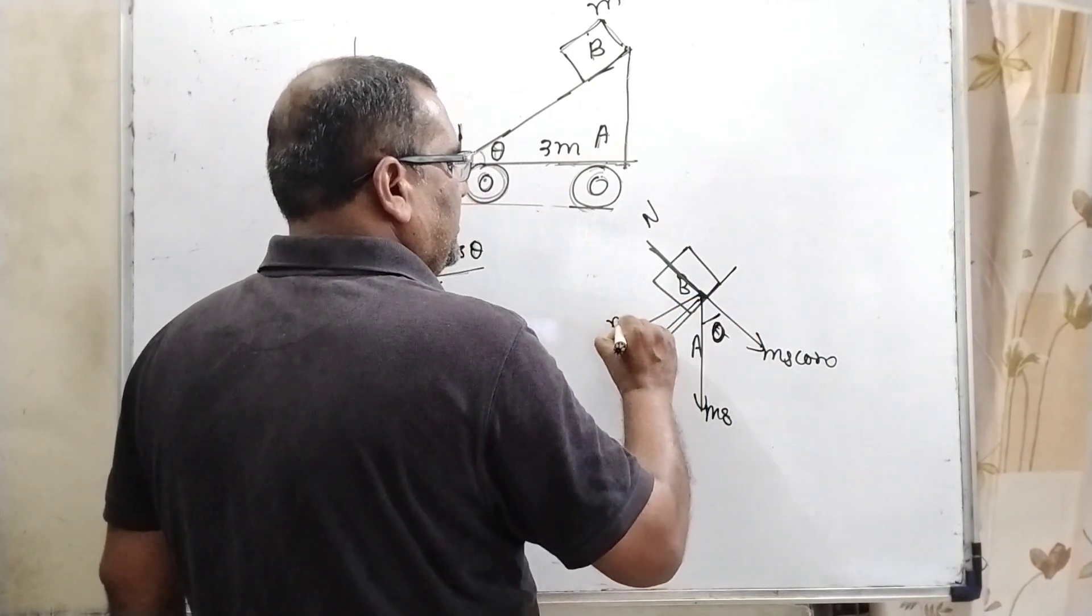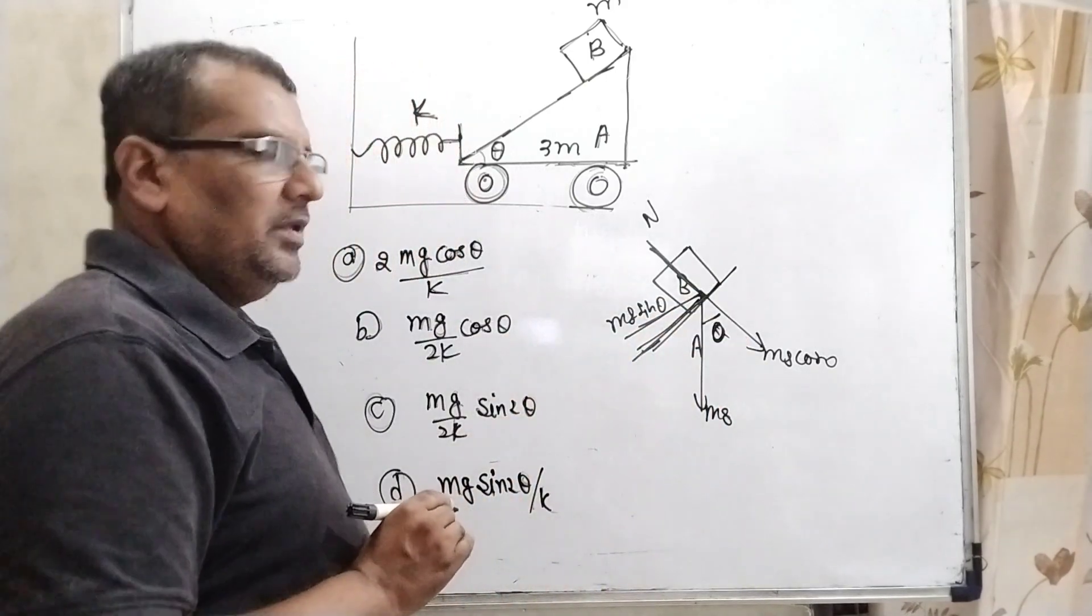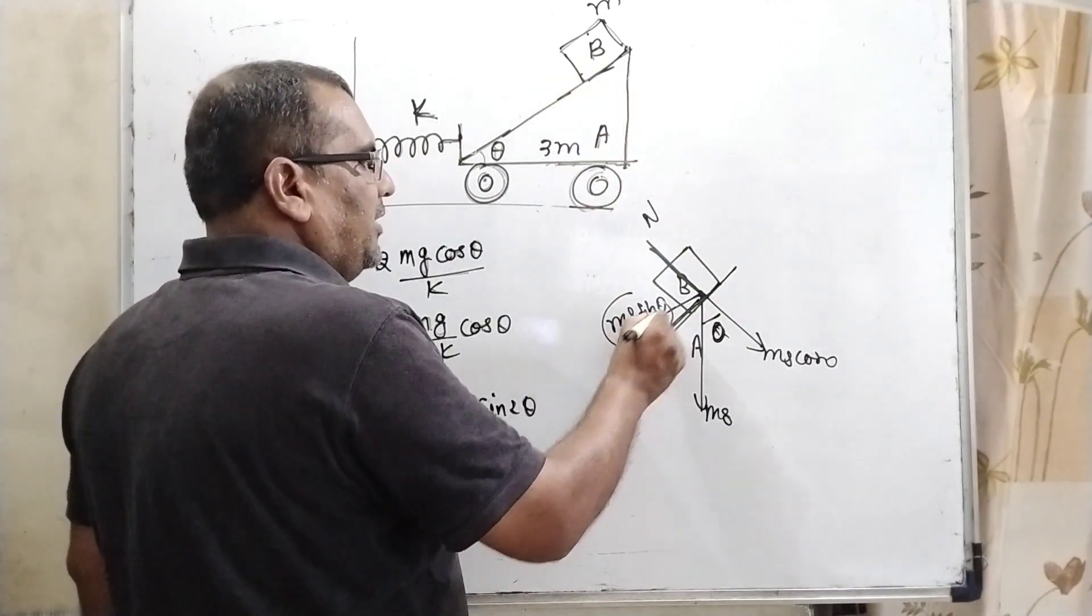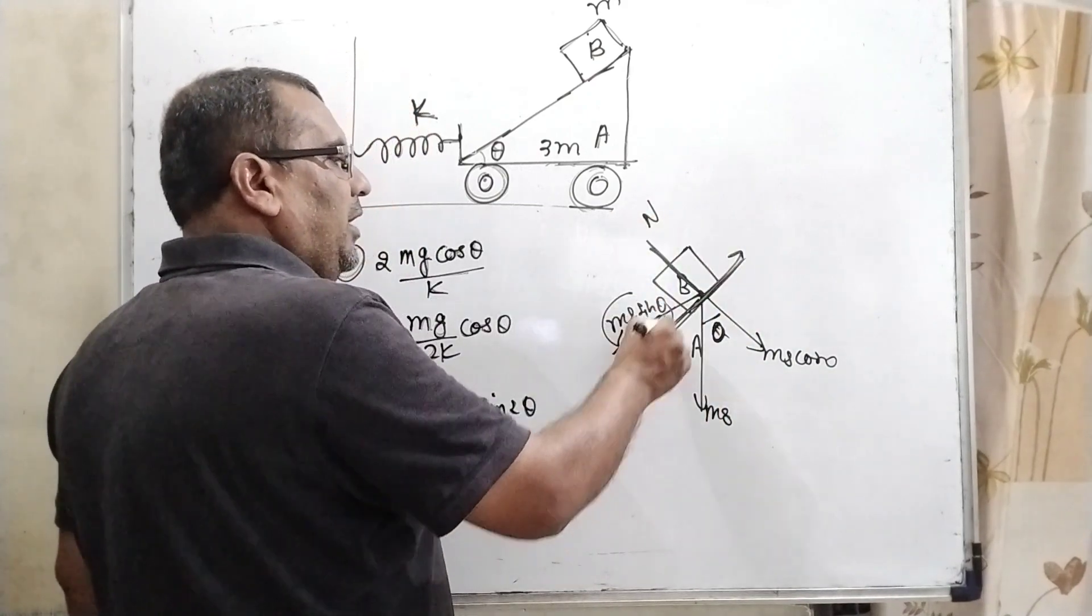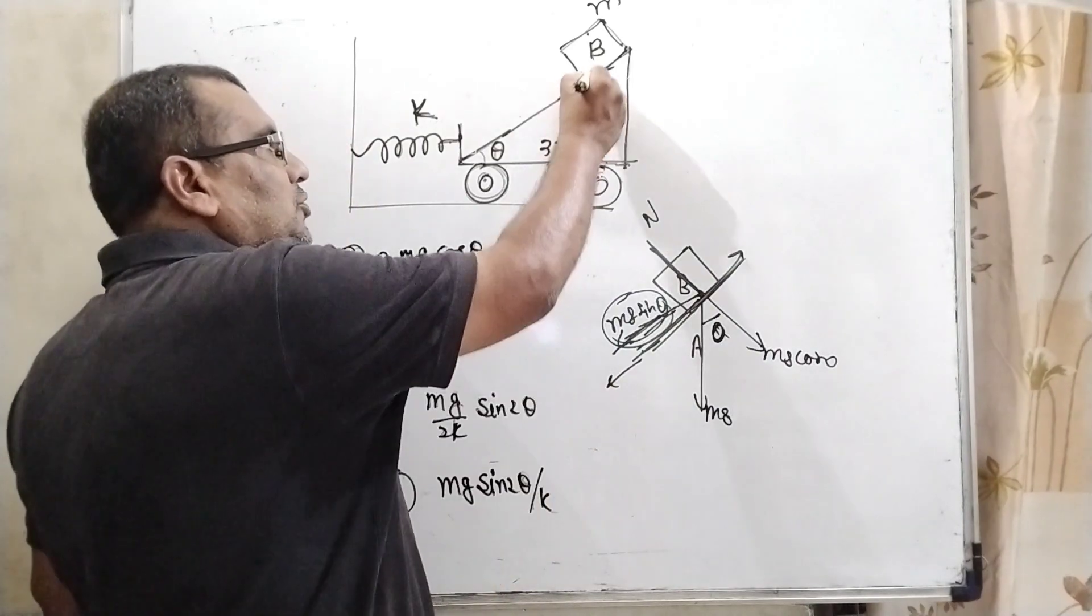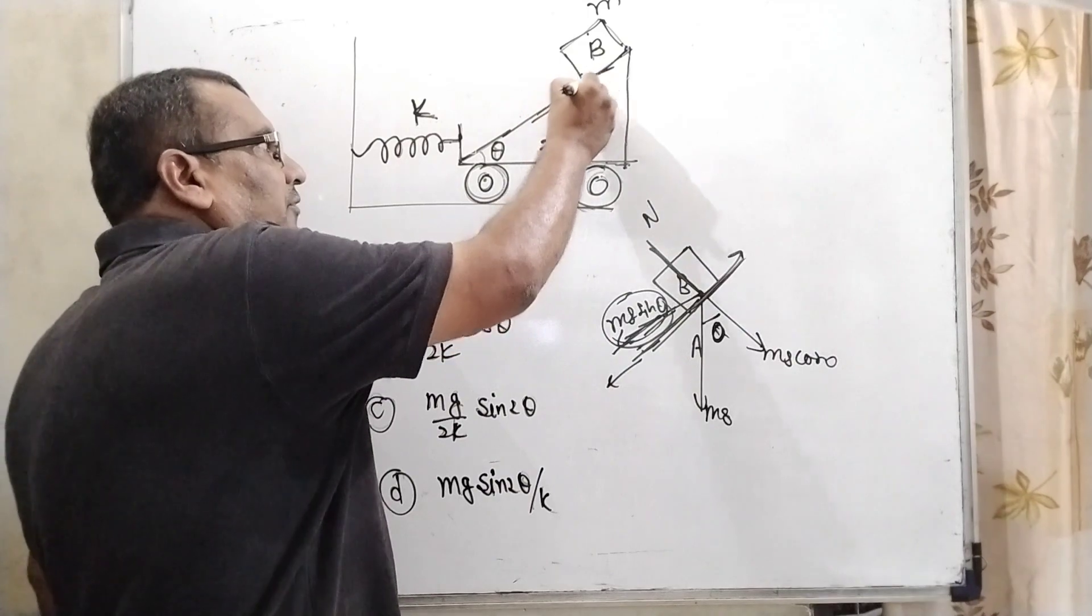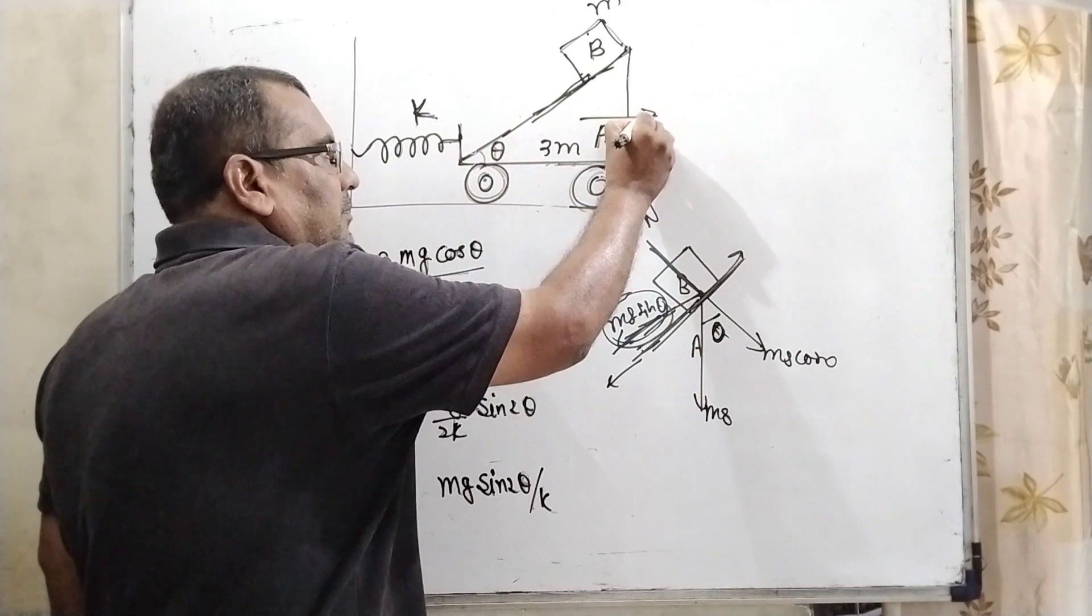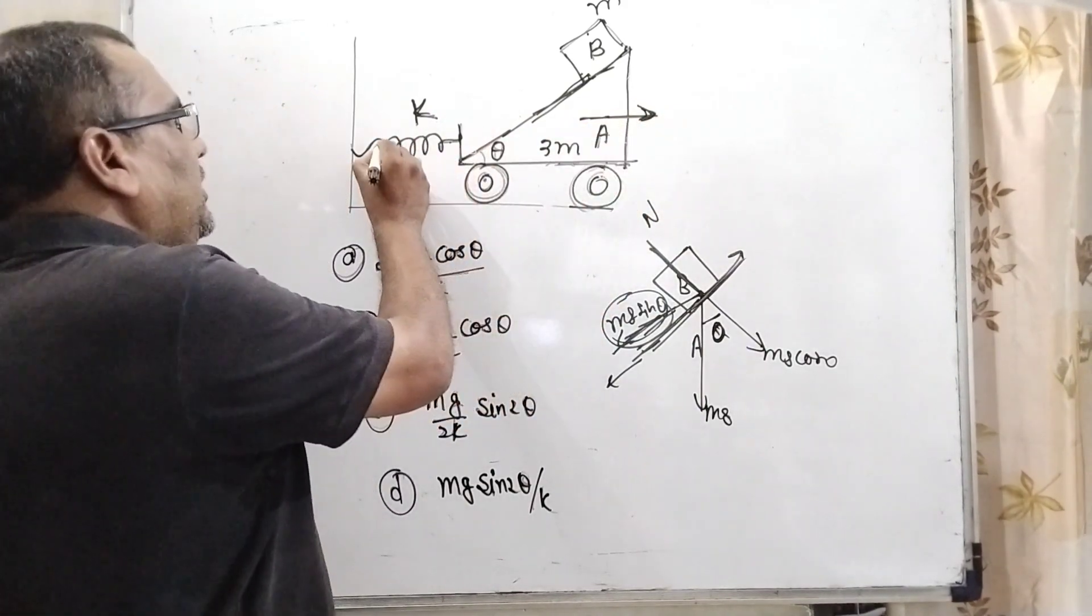Here, due to this Mg sin theta, the block becomes sliding. So our first concept: why is it sliding? Because Mg sin theta is acting in the downward direction. As given in the question, there is no friction. So therefore, this force is acting in the downward direction. So therefore, it becomes sliding. And due to this sliding of B block, pseudo acceleration is generated, and its direction is towards the side direction. And due to this, the spring becomes extended.